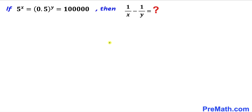Welcome to pre-math. In this video we have got this interesting problem: if 5 power x equals 0.5 power y equals 100,000, then we are going to find the value of 1 divided by x minus 1 divided by y.